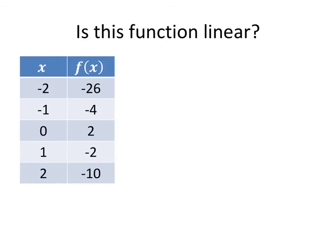Let's do one more example. Again, we have a table of values and we want to know: is this function linear? So we're going to do the same thing — we're going to find the average rate of change between all these pairs of points.